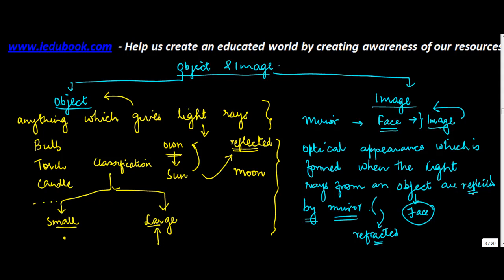Please note this is refracted, this is reflected. Reflected we saw in one of the earlier videos. Refracted will cover in detail subsequently through a lens. So this optical appearance which is found when the light rays falling from an object are reflected by the mirror or refracted through a lens.